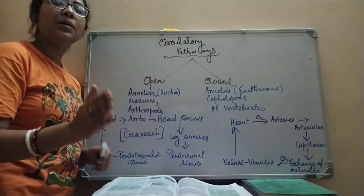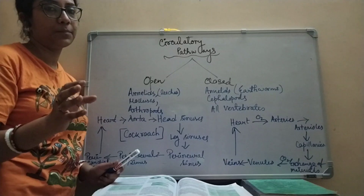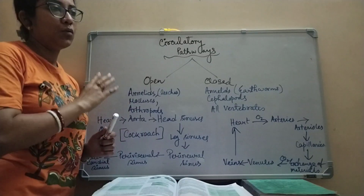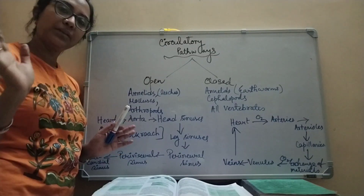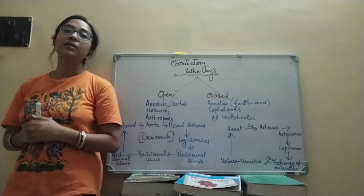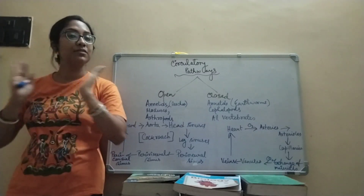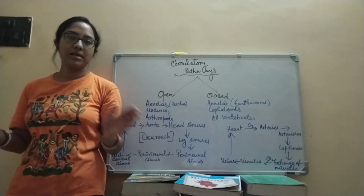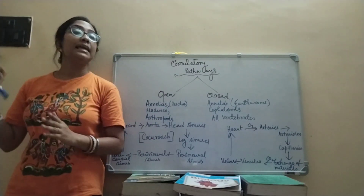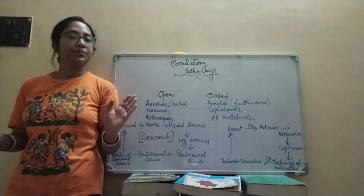This is the introductory part of circulatory system and body fluids. We have covered: what is circulation, what are body fluids, different types of circulation, functions — everything. Today is just the introductory part of Chapter 18, Body Fluids and Circulation. We addressed four major parts: what are body fluids, what is circulation, different types of circulation, and different types of body fluids. In the next class, we will study blood in detail — different categories and every parameter of it.